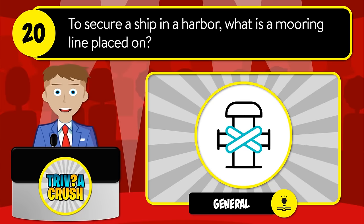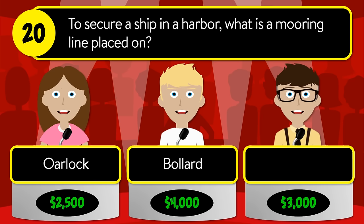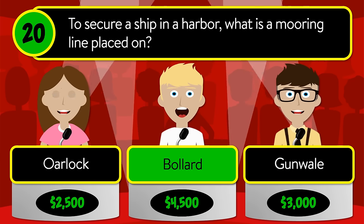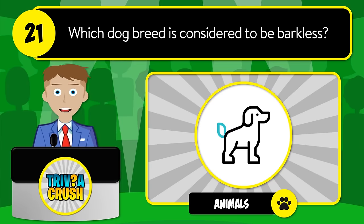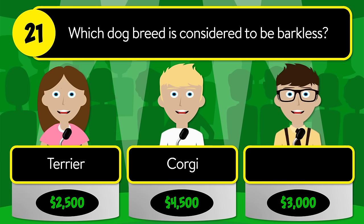Question number twenty: to secure a ship in a harbor, what is a mooring line placed on? Is it a lock, bollard, or gunwale? The correct answer is bollard.